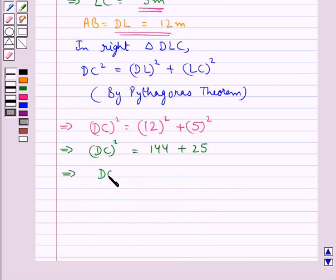So we have DC square is equal to 169, which means that DC is equal to square root of 169, which is equal to 13.